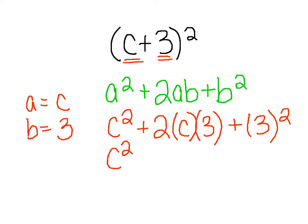Simplifying this out, we have c squared, plus 2 times 3, which is 6c, plus 3 squared, which is 9. And there's my final answer: c squared plus 6c plus 9.